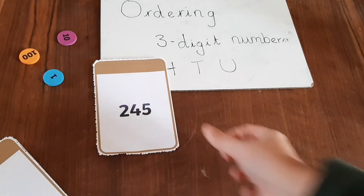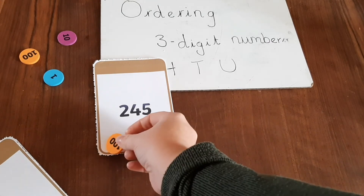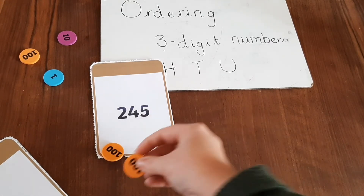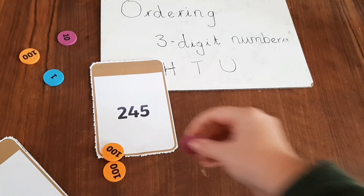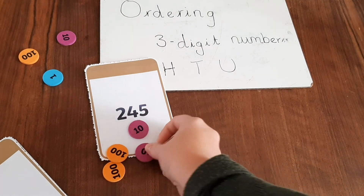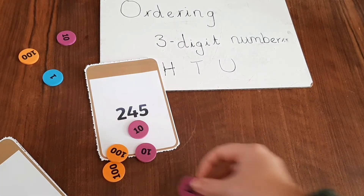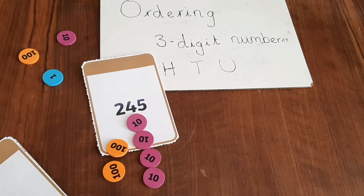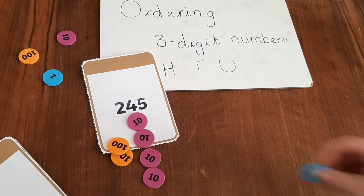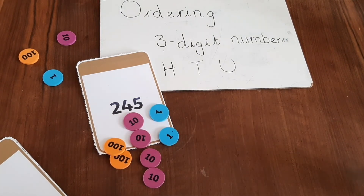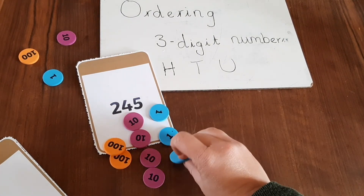The last activity is really simple — you just need one of the number cards, and I've used some coins here to represent hundreds, tens, and ones. Your children can have a go at representing the number. This is really good for those children who are just trying to understand exactly what makes a number.